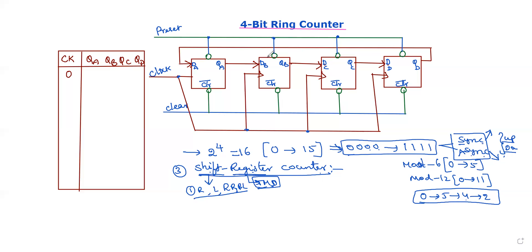So here we have a ring counter. Ring counter uses a rotate right shifting operation. When we change the data, we follow one of these shifting operations. For a ring counter, we use the rotate right operation.